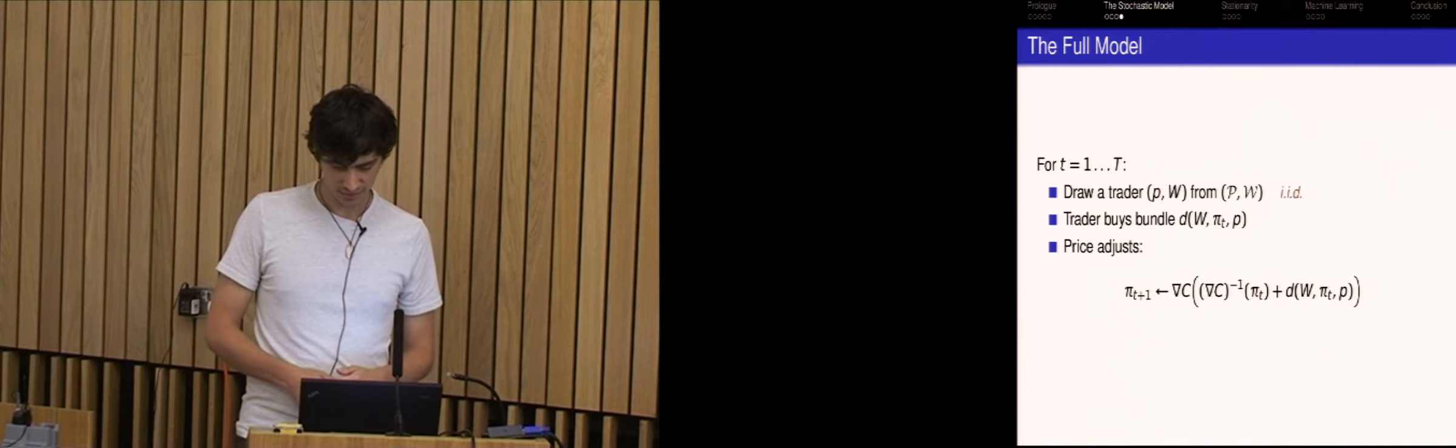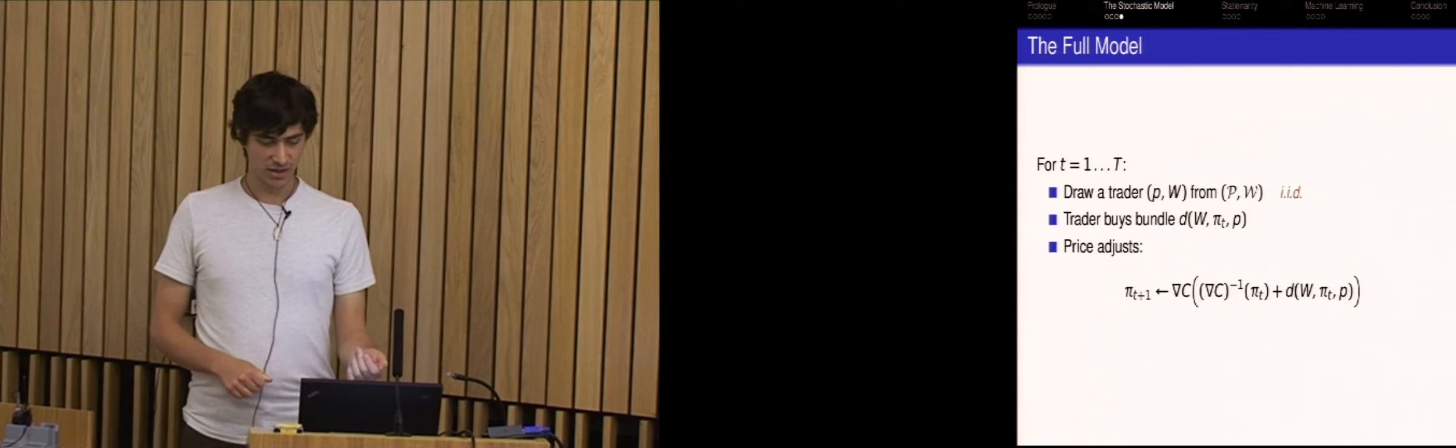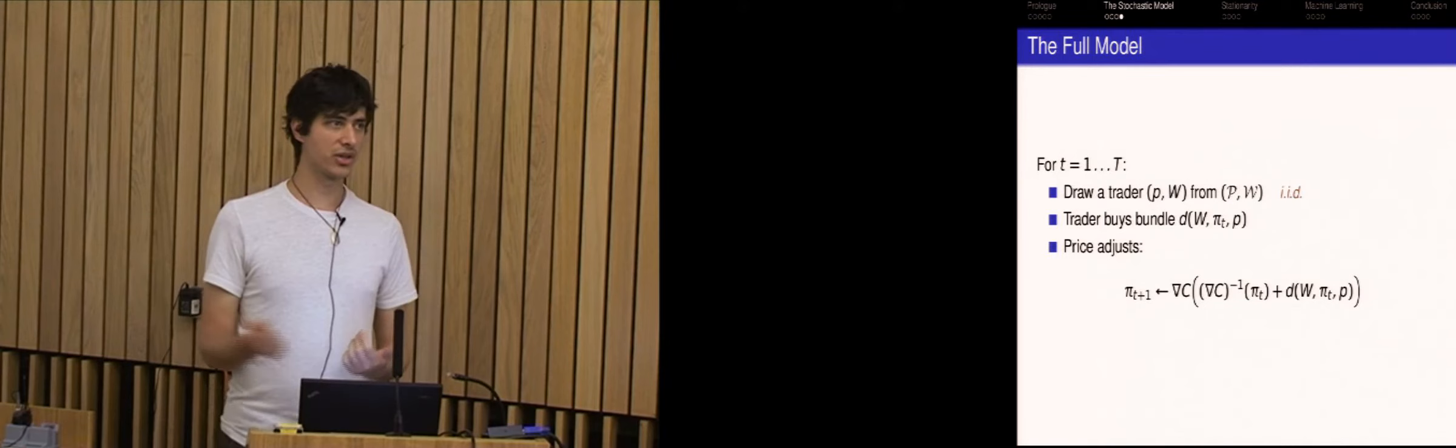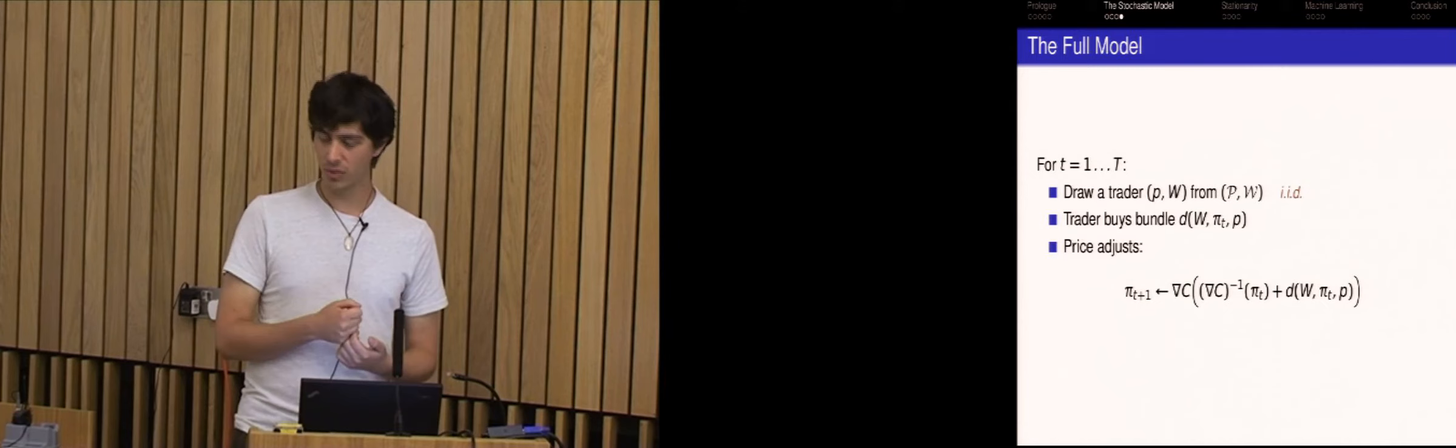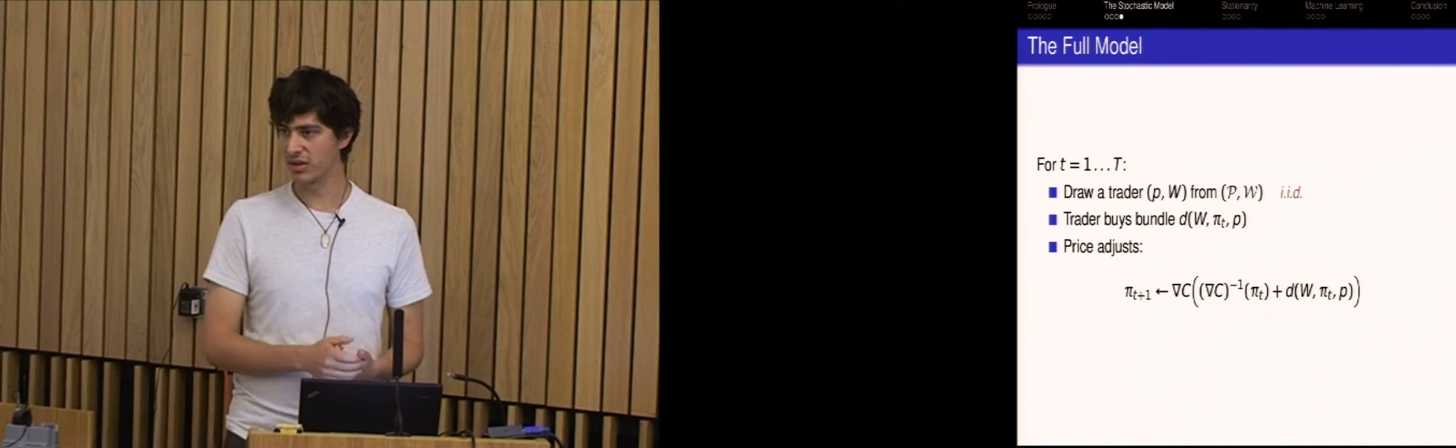And then you add the demand to that and then ask what the price is at that point. So if this is not quite clear... You wrote this in mirrored descent form because you're going to... No, I mean, this is, there's no other way to write the price update, right? I mean you could write it as an argument or something, but I think it's a very natural way to express it. You just ask what the current prices are, you map that to the quantity vector, add the demand and then ask what the new price is.